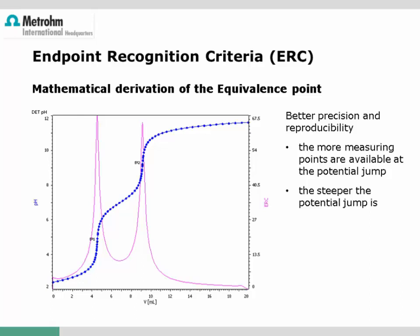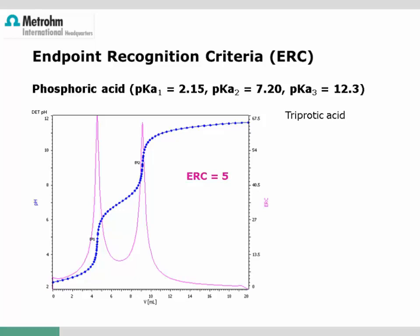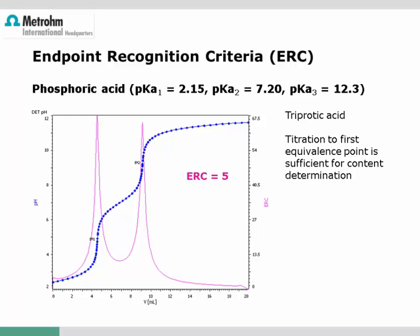For the first example, 3-protic phosphoric acid with an ERC of 5 (the default value of most instruments): the first two protons show a nice separation, whereas the third cannot be calculated since its pKa value is too large. With an ERC of 5, both equivalence points are evaluated and displayed. If used to determine phosphoric acid concentration, the titration could be stopped after the first equivalence point, but continuing to the second allows verification of purity — only if the volume of the first equivalence point equals the difference between the second and first is it pure phosphoric acid.